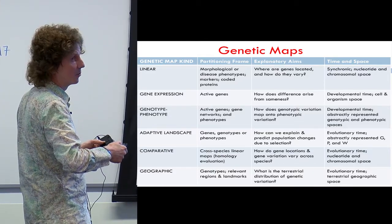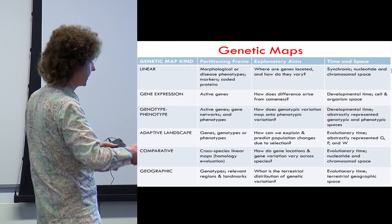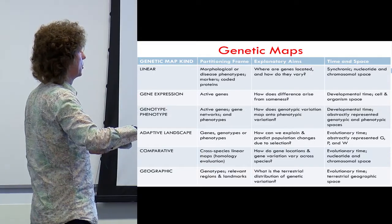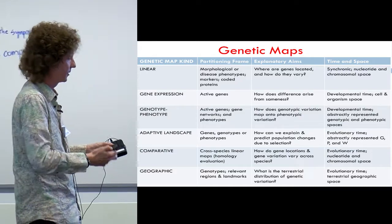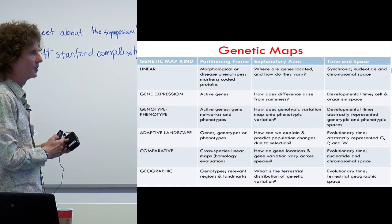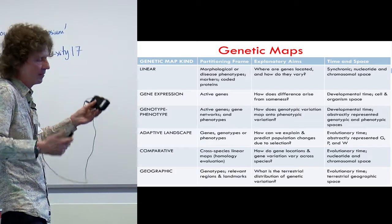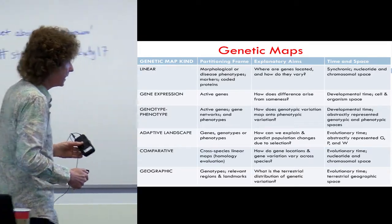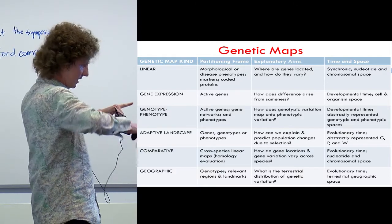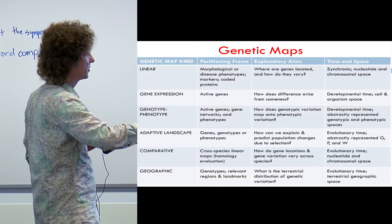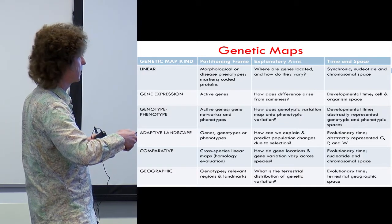Gene expression maps look at where genes get activated — what part of the organism, or what part of the superorganism if you're working on ant colonies or bee colonies. Manfred Laubichler and his collaborators have interesting work on how genes get expressed in the superorganism in different individuals. The basic idea is to map out the active genes in cell and organism space, intracellular space, and developmental time. The fundamental question is: how does difference arise from sameness?